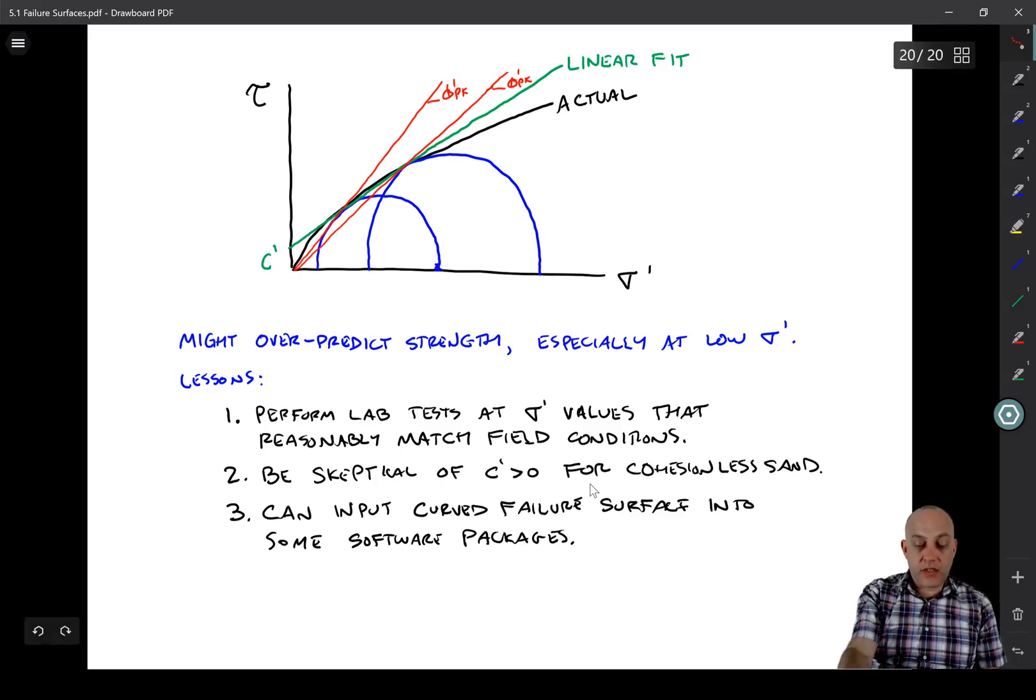Another alternative is that you could fit a curved surface to the data, instead of fitting a straight line. And then our computer program is going to allow you to put in a curved failure surface sometimes. So that could be a good alternative when the programs will allow.